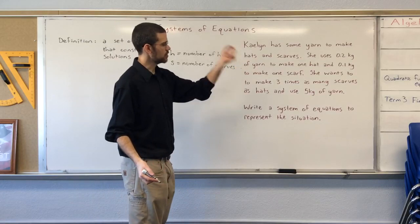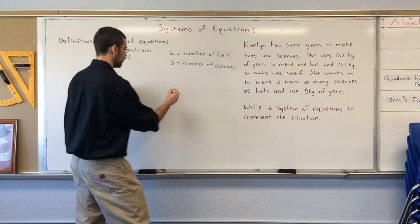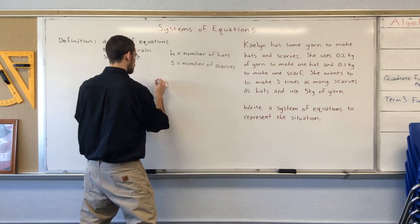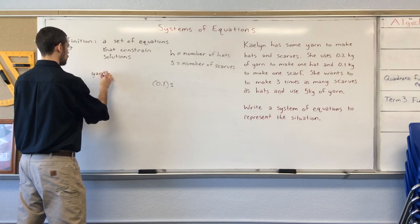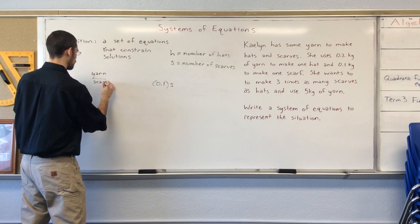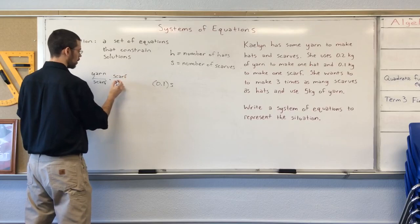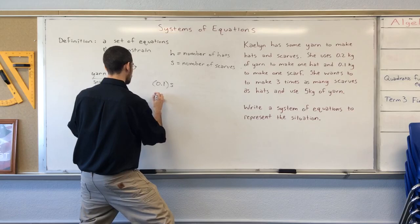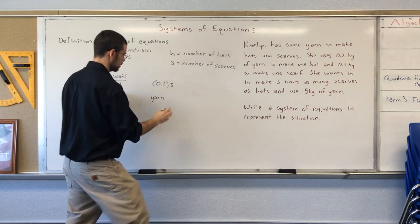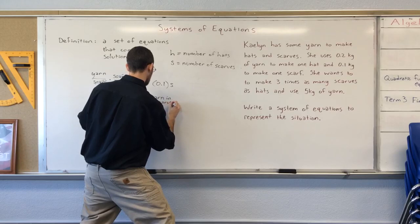It says that it takes 0.1 kilogram of yarn to make a scarf. So, we have 0.1 times S, the number of scarves. So, yarn per scarf times scarves. Number of scarves, whole scarves. The scarves cancel and that gives me yarn. So, this expression right here represents the yarn used for scarves. Yarn in scarves.